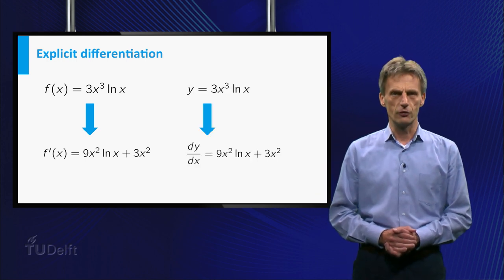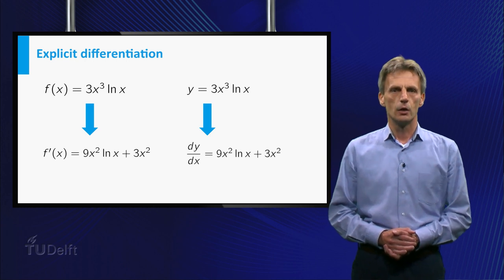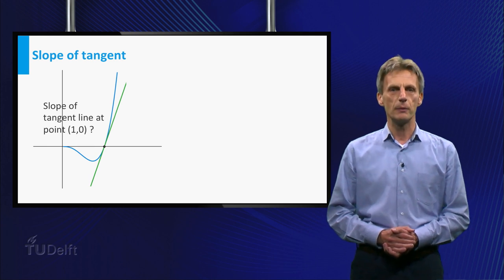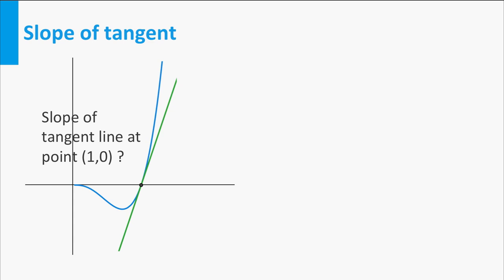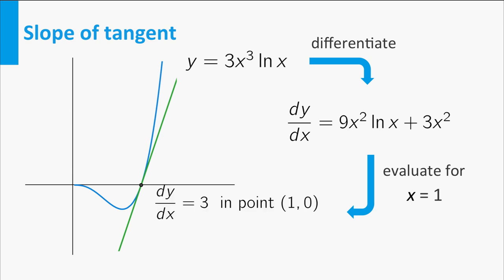Alternatively, the derivative is often denoted by dy/dx. The slope of the tangent line to the graph of this function at one of its points can be computed in the following way: you start with the explicit formula y is equal to f, then you compute the derivative of the function f for general x, and finally you evaluate the derivative for the specific value of x. The result is the slope of the tangent at the specific point.